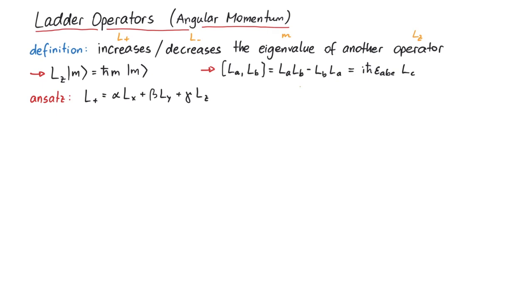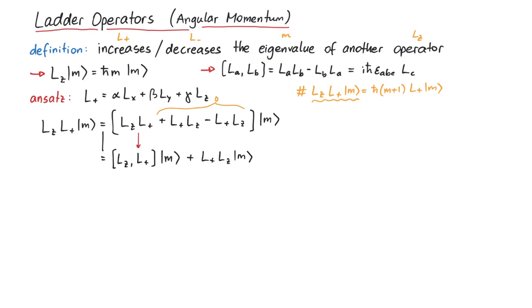Let's now take the equation that defines the action of l plus and focus on the left-hand side. First, we add and subtract the same term, so that we can write two of the three terms as a commutator, and the last term is now in opposite order than what we started with. This means we can let lz act on the state m, and we get h bar m times l plus m, plus the commutator of l z with l plus, acting on m.